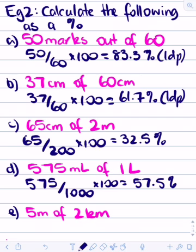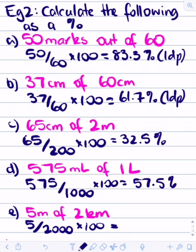The last one: 5 meters of 2 kilometers. There are 1000 meters in a kilometer, so 2 kilometers is 2000 meters. Using A over B times by 100: 5 divided by 2000 times by 100 equals 0.25%.